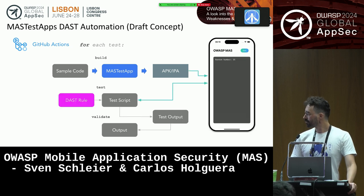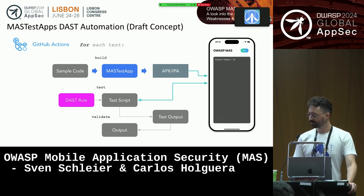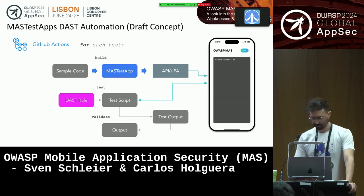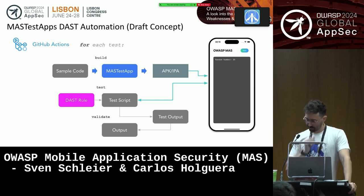We would also like to do this even for DAST. Same thing — we create the APK and IPA with the sample code from the test cases using our iOS and Android dummy app. Then it gets installed into a virtualized device. The DAST rule can be executed, which could be a script utilizing Frida or Frida Trace. We generate some output and validate it with the expected output. Then we can validate even across various Android or iOS versions — and maybe in the future — whether specific tests are applicable or consistent.